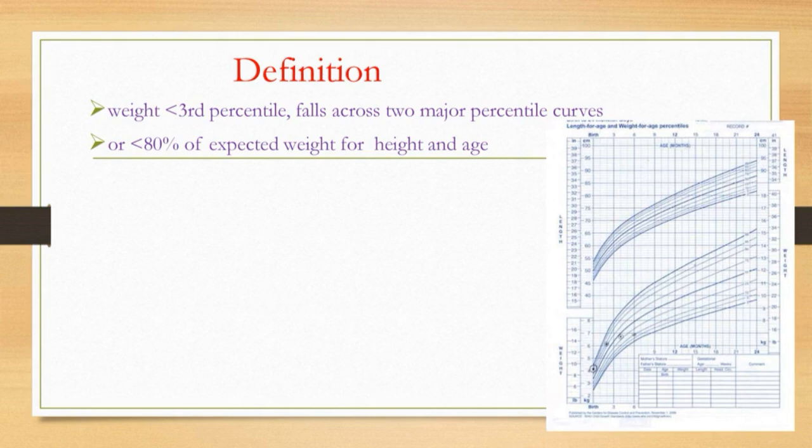Weight less than the third percentile, fall across two major percentile curves, or less than 80% of expected weight for height and age.